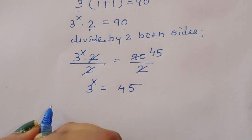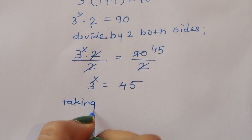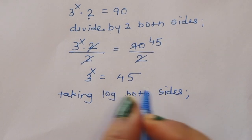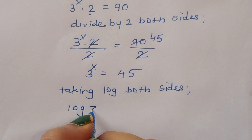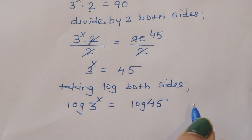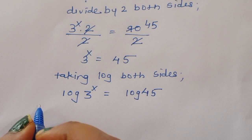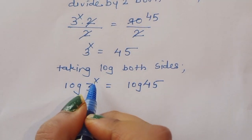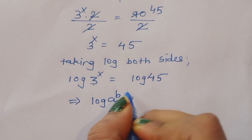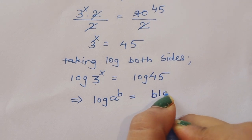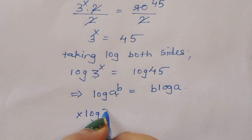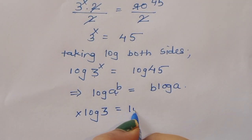Now we can take log. Taking log on both sides: log of 3 power x is equal to log of 45. Now we can apply the formula — log of a power b is equal to b times log of a. Using this formula here, we can write x log of 3 is equal to log of 45.